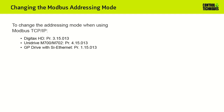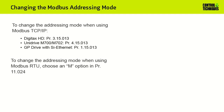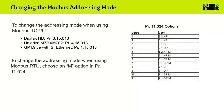In a Unidrive M700 or Unidrive M702, this parameter is found in slot 4, menu 15. In a general-purpose drive that is equipped with an SI Ethernet module, the addressing mode parameter is found in slot 1, menu 15, parameter 13. The addressing mode may also be changed when using Modbus RTU. To do that, refer to menu 11, parameter 24.